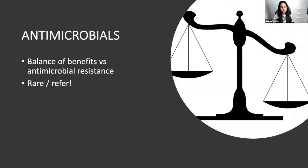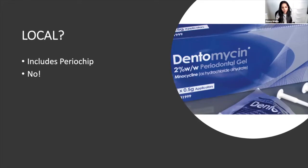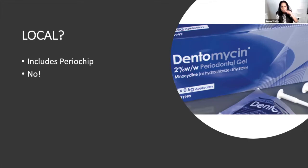Antibiotics are very limited — reserved for what we used to call aggressive perio patients, or where you're not getting expected outcomes despite no obvious risk factors. For local antibiotics like Periochip, the evidence is not strong. When reps try to sell you products, ask yourself: is this statistically significant or clinically significant? A 0.4mm improvement may be statistically significant but clinically meaningless. If it's not clinically significant, you might as well do a small surgery instead.